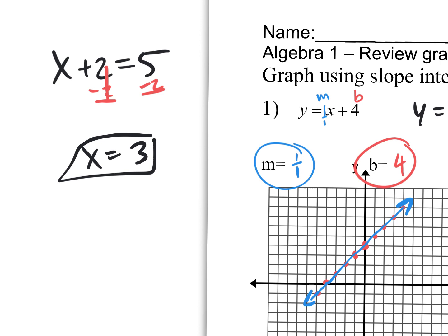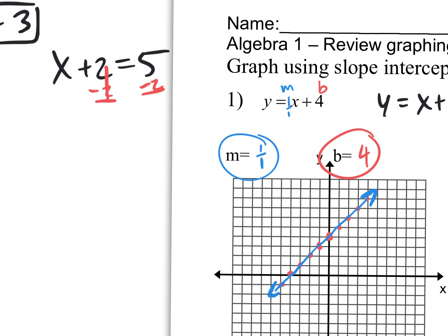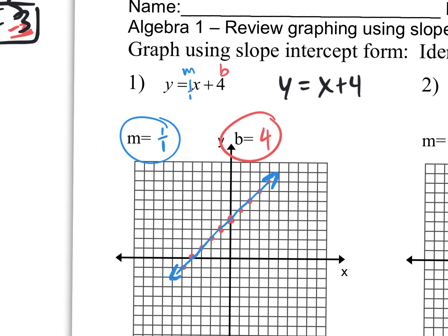With two variables, the answer would be a value I could plug in for x and a different value for y. For example, give me a number for x — say 2. What's 2 plus 4? 6. So an answer would be the coordinate (2, 6), because we plugged in 2 for x and 2 plus 4 gave us the y value of 6. Now, where is (2, 6) on the x-y plane? It's 2 on the x, 6 on the y — the location (2, 6).